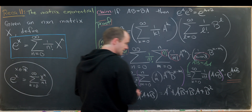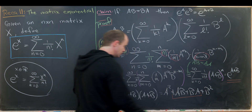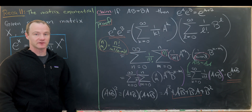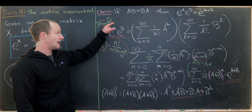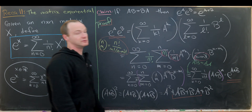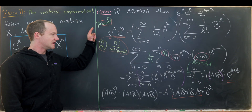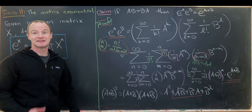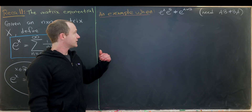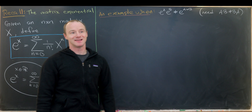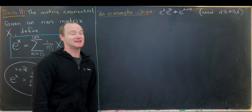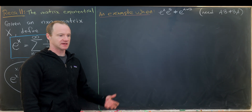Just to reiterate: when you expand a power of a sum of matrices, you get differently-ordered (commuted) objects, which is why we need this commutativity condition in order for the product formula e to the A times e to the B equals e to the A plus B to hold. Now let's clear the board and do a concrete calculation when this fails. We need the condition that AB is not equal to BA, because of what we just proved.